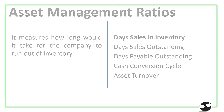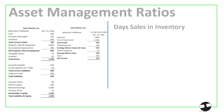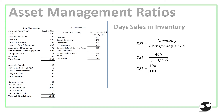First, we have Days Sales in Inventory (DSI). It measures how long it would take for the company to run out of inventory. The formula is inventory divided by average days of cost of goods sold, so that's 490 divided by 3.01, giving us a DSI of 163 days.